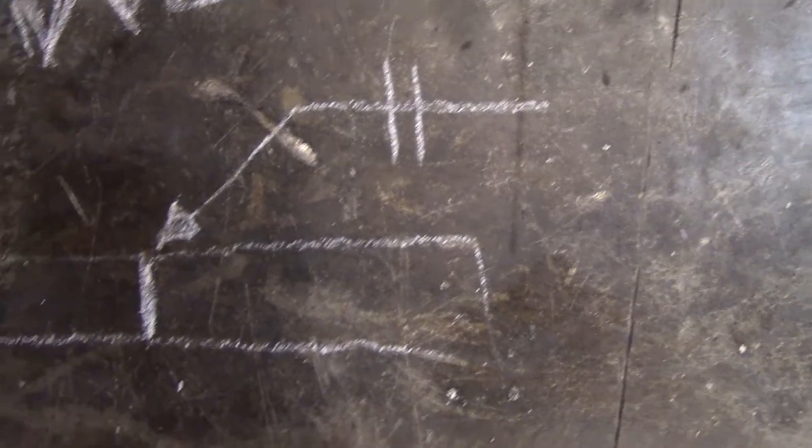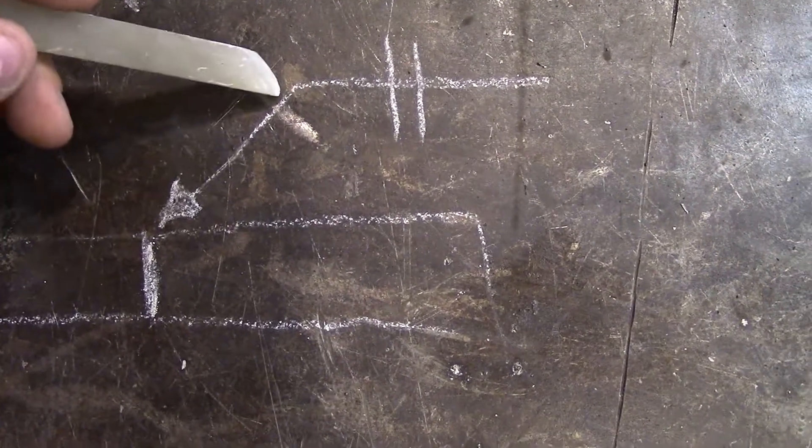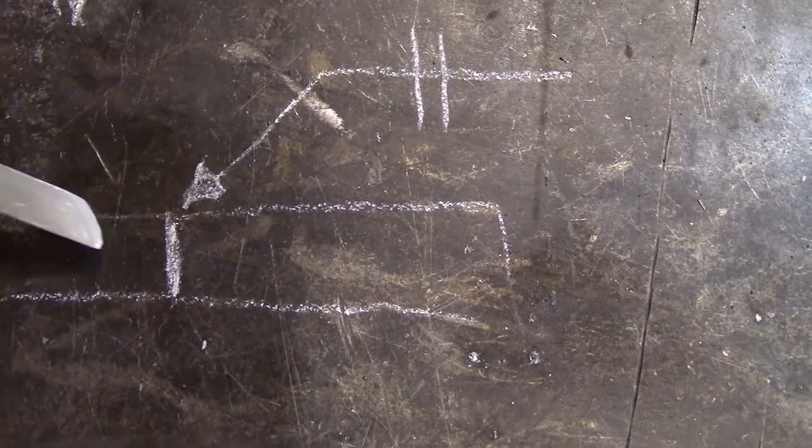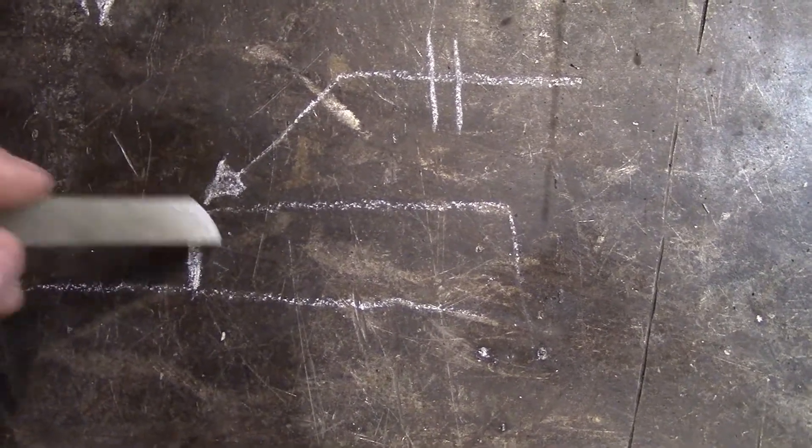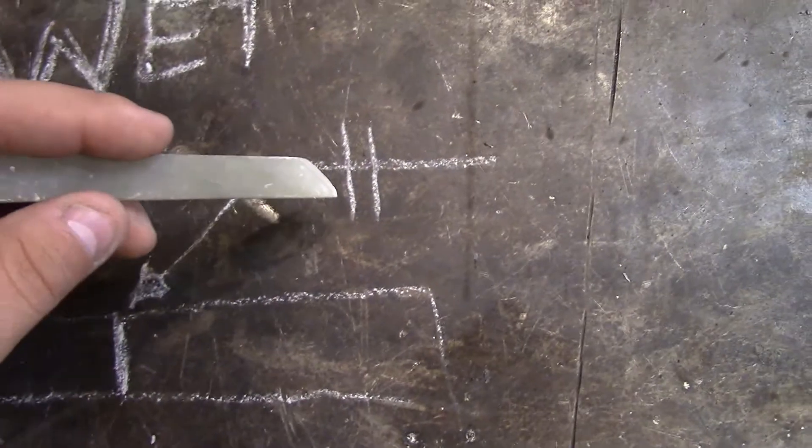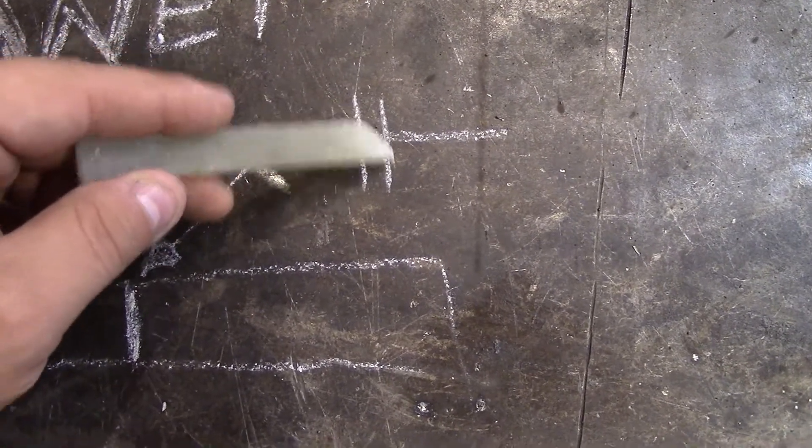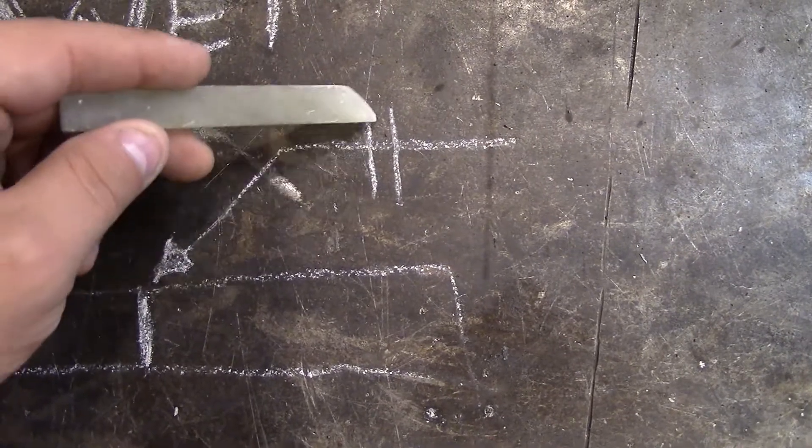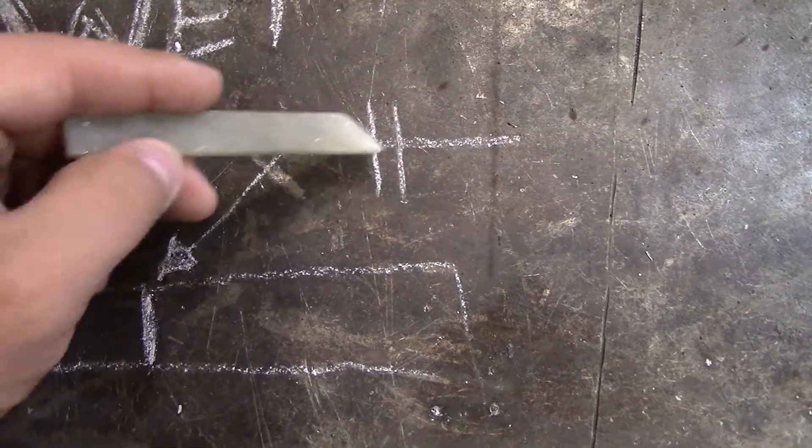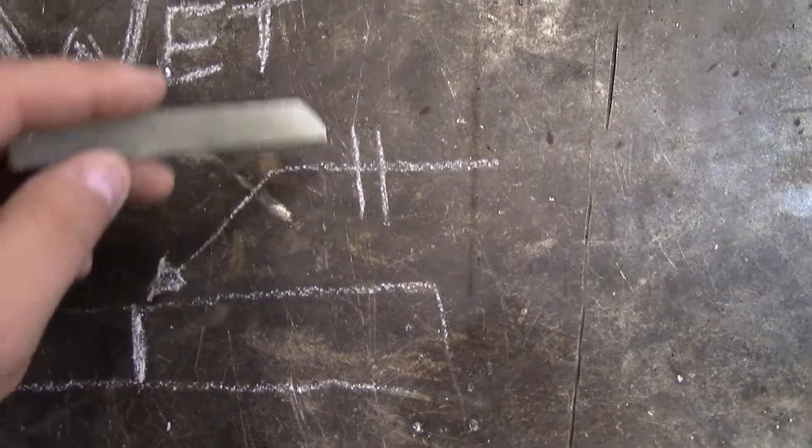This is your weld symbol. Our arrow is just pointing to either or. If it was a prepped side, then you would point the arrow to the side that's being prepped. But square groove symbol, that's it, just the two hash marks. Since it's both sides, I'm on both sides of my reference line - other side, arrow side.